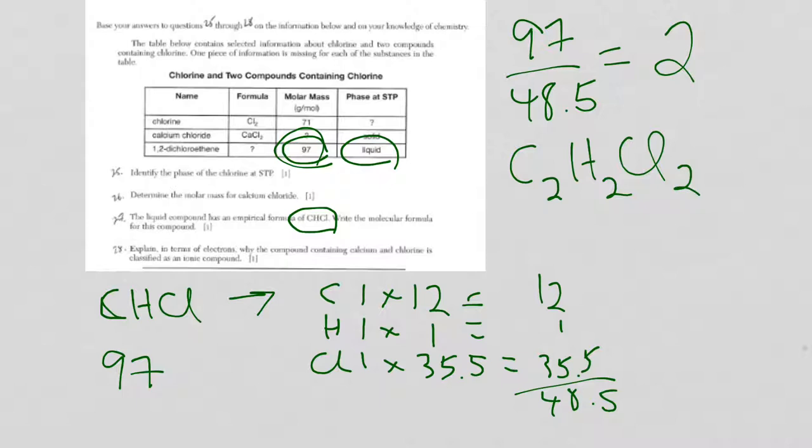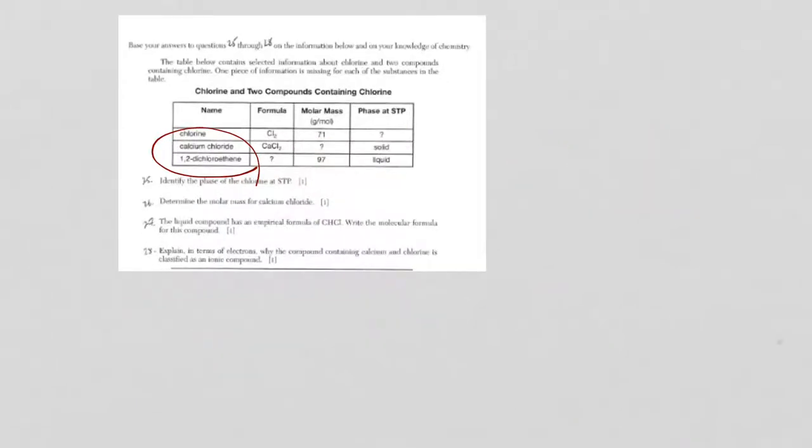Now, the other way I could have done it is by the name. So, I have 1,2-dichloroethene. So, I could draw that molecule and then count everything up. It should come out exactly the same. So, for 1,2-dichloroethene, there is, of course, the three reference tables that have to do with organic. The E ending means that I have two carbons and I have a double bond. And, eth means two carbons. And then, 1,2-dichloro means I have a chlorine on the first carbon and a chlorine on the second.